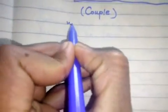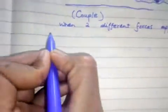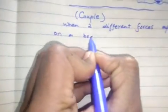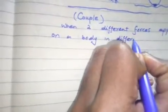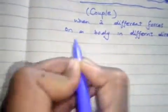First, we want to discuss the couple's definition. The definition is: when two different forces are applied on a body in different directions, it makes a couple.